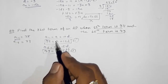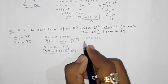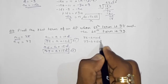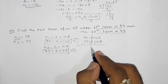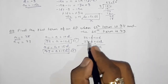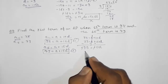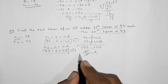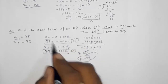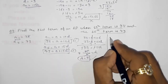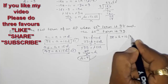Using elimination: subtract equation 1 from equation 2. The 'a' terms cancel, leaving 15d − 10d = 73 − 38, so 5d = 35, giving d = 7. The common difference is 7.